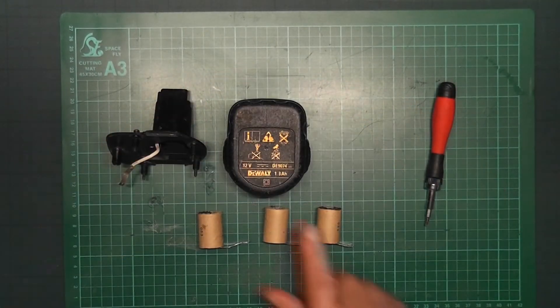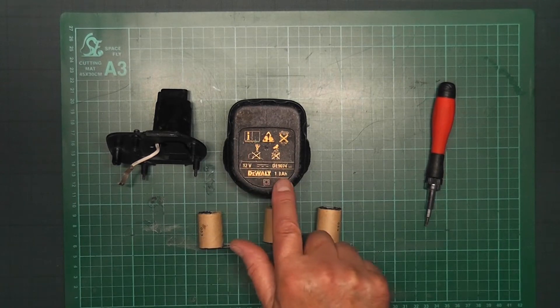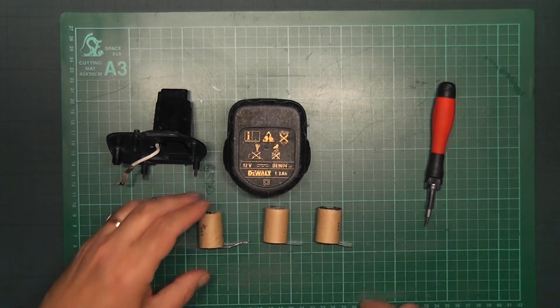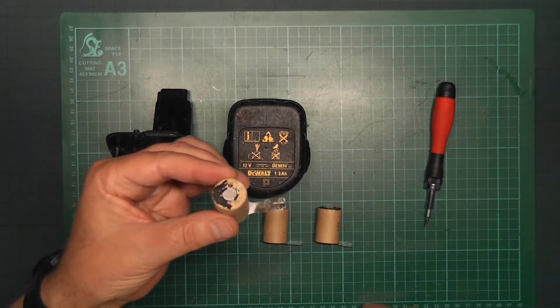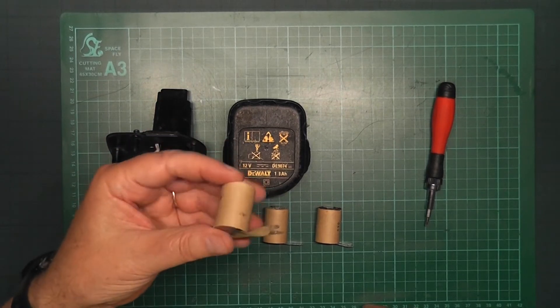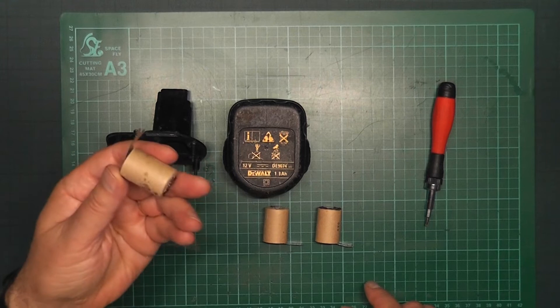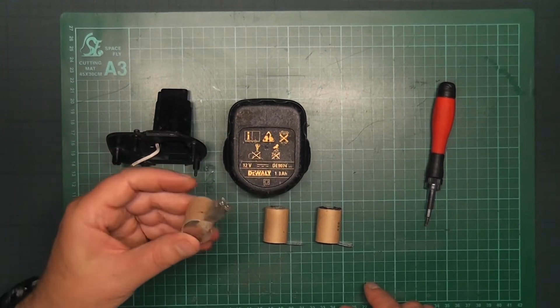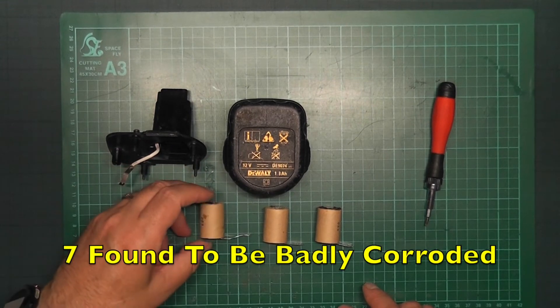Now I've pulled it apart and again remember 12 volts, 1.3 amp, and these are the batteries that I found inside. There were 10 of them and actually only three of them were any good or in any way not rotten.